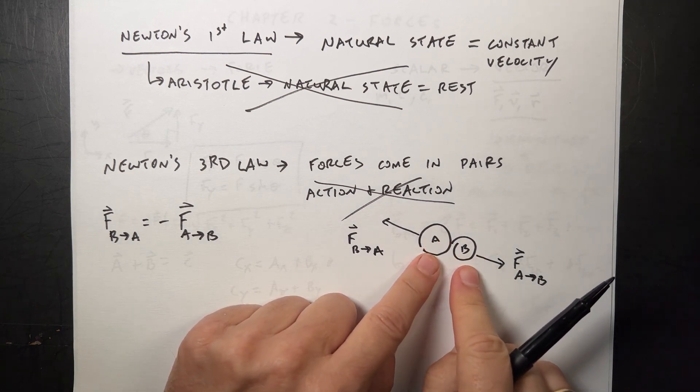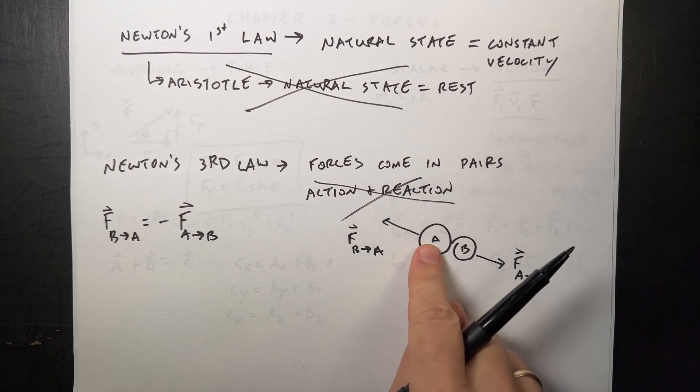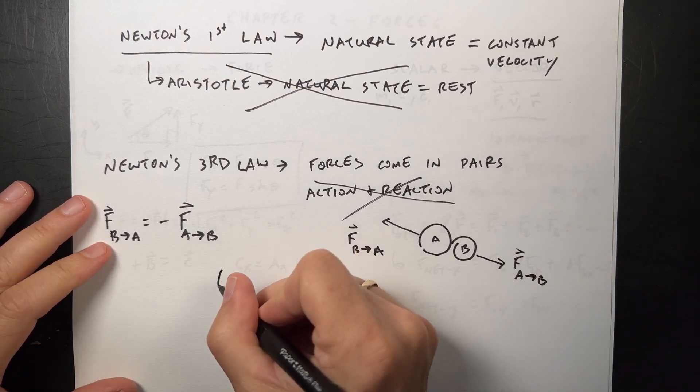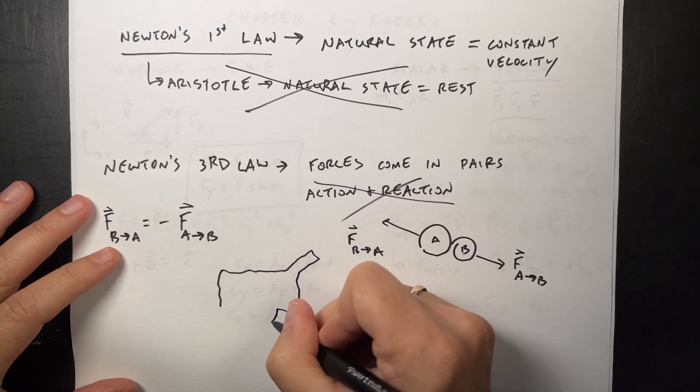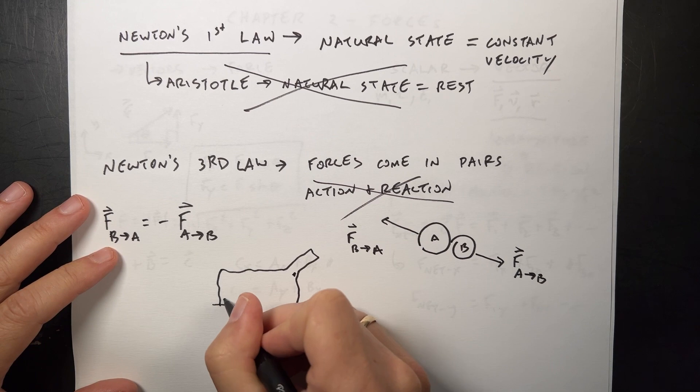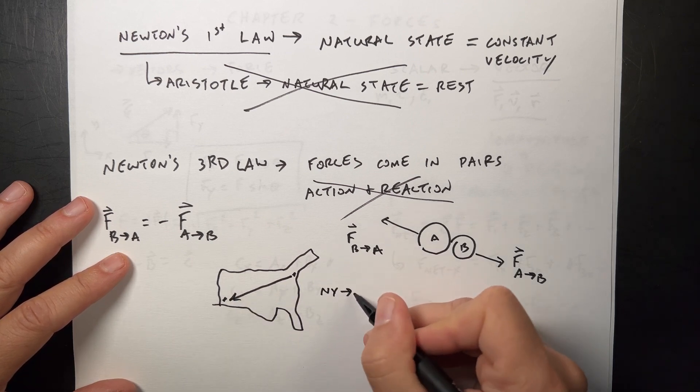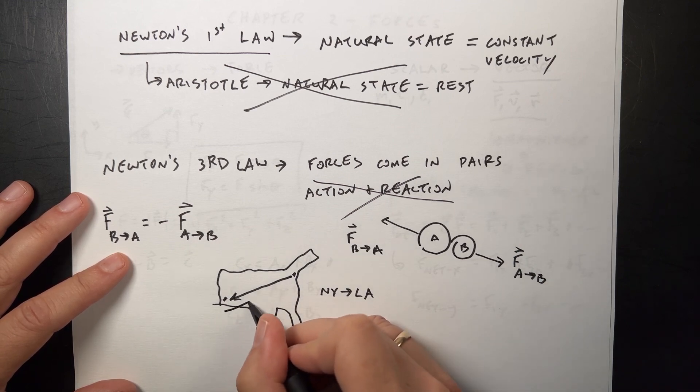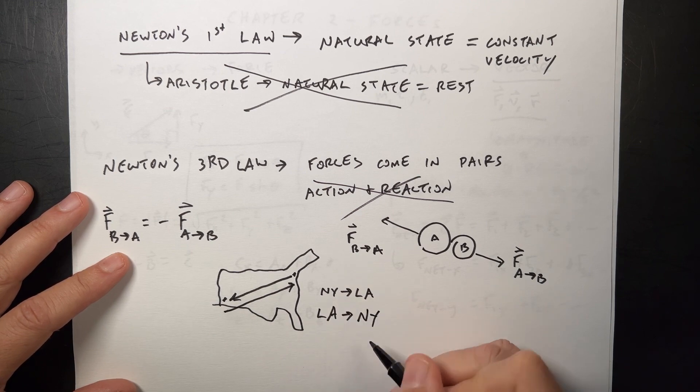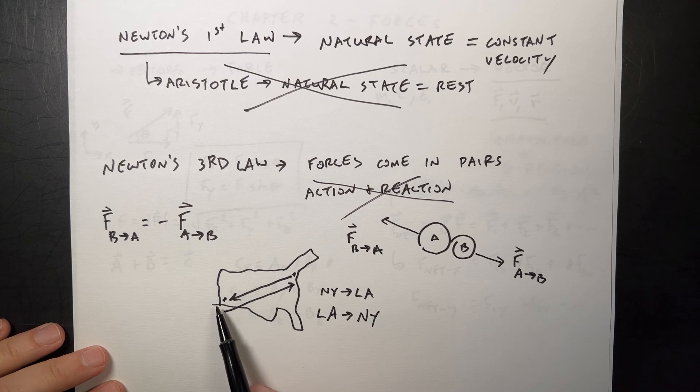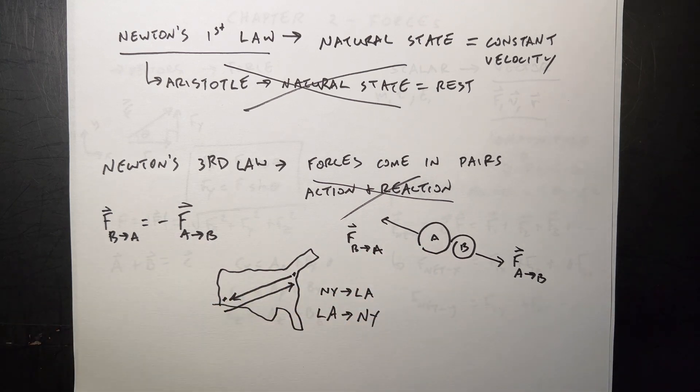That's Newton's third law - forces come in pairs. There's always an interaction between two objects. If A pushes on B, B pushes on A with the same magnitude but opposite direction. Here's an example with distances. If I have New York and LA, the distance from New York to LA is the same distance as LA to New York, just in opposite directions. Distances come in pairs too - it's always the distance between these two places. Same thing with forces. You couldn't have one of these different distance than the other.